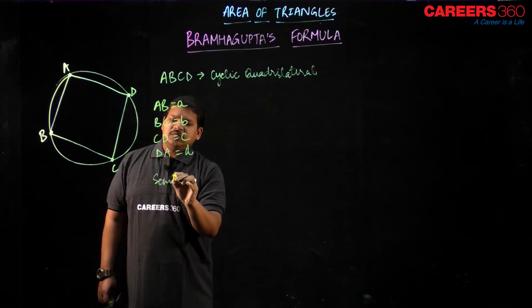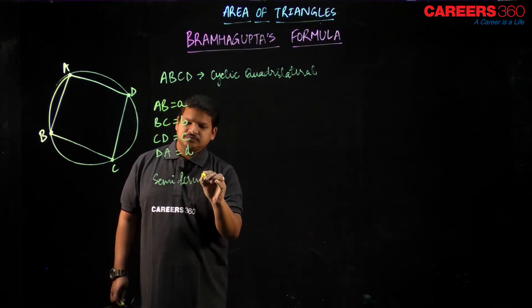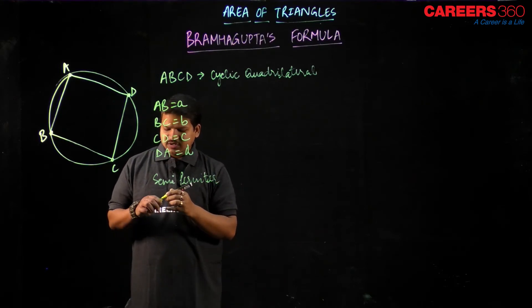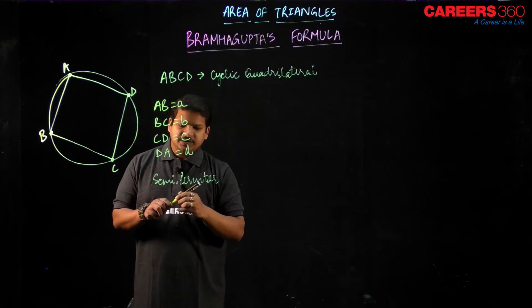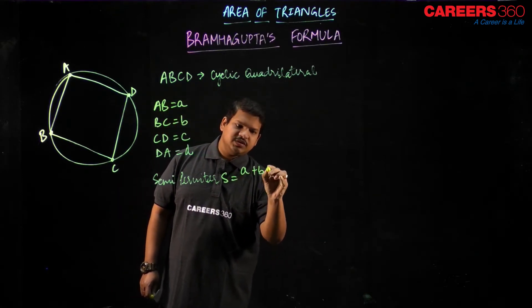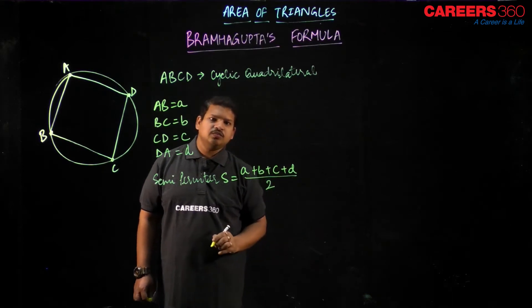So our term in this case, the semi-perimeter S, would be a plus b plus c plus d by 2, right.